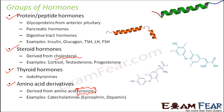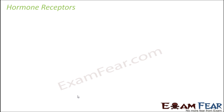Now the question is: why are we talking about these different groups of hormones? Because each group of hormones has a specific way of action — not every hormone follows the same mechanism. Different groups of hormones will have different mechanisms of action. The first step for any hormone to act is that there has to be a receptor that can receive or recognize the hormone.